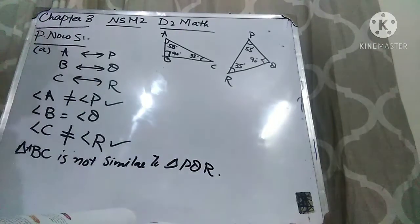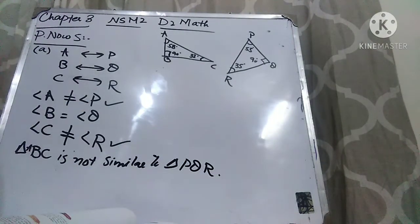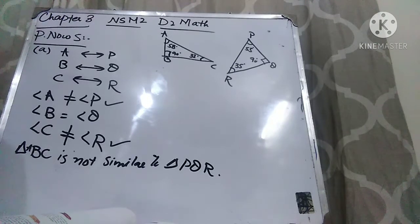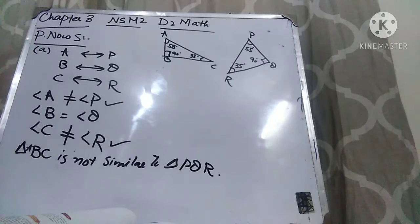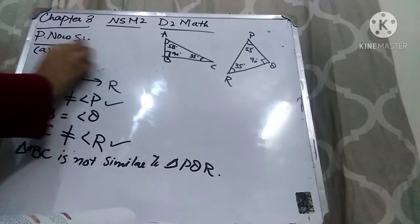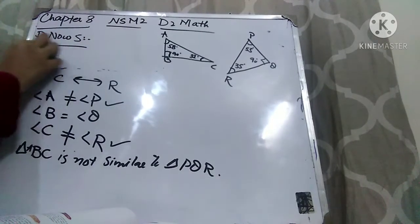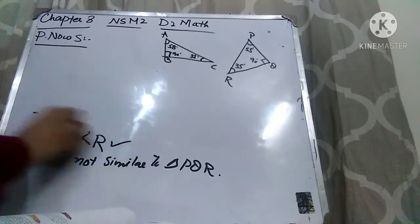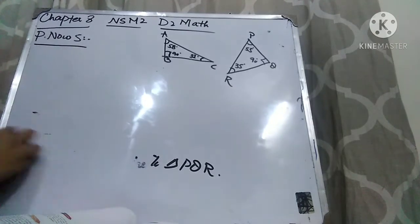So this is your answer — these are not similar figures. I hope part A is clear to you. Now let's move forward to part B. In part B, the sides are given. Students, whenever the angles are given we find missing angles to determine similarity; whenever sides are given, we find the ratios of corresponding sides.